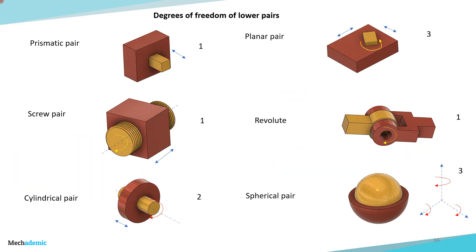Now let's understand the degrees of freedom allowed for the lower pairs, connecting link 1 (yellow) and link 2 (red). In the prismatic pair, only one relative motion is allowed — translational movement in the direction of the arrow. In the screw pair, a screw goes into the internal thread of a block; when the screw rotates, the block moves. The relative degree of freedom is only 1 — the block moves relative to the screw, or the screw rotates relative to the block.